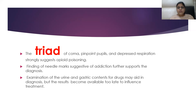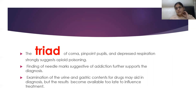Finding of needle marks on the skin — on the arms or hands — is suggestive of addiction and supports a diagnosis of morphine poisoning. Examination of the urine and gastric contents for drugs may aid in diagnosis, as we can see the presence of opioids in the urine and gastric contents. However, the results become available too late to guide early treatment.